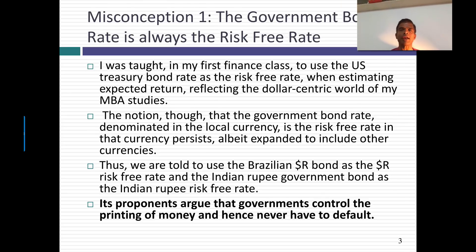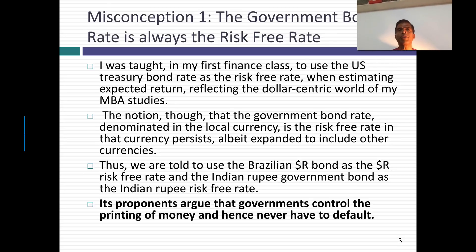That shows you how dollar-centric my MBA classes were. The assumption was, if the US treasury is issuing something, it's default-free. Why? Because governments don't default. And proponents back it up with a simple and perhaps persuasive statement: when governments issue bonds in the local currency — Indian government in rupees, the Indonesian government in rupiah, the US government in dollars — it doesn't have to default. Why? Because it controls the printing presses. It can print more money. So why would a government ever default in the local currency? Therefore, let's use the government bond rate in the local currency as the risk-free rate.